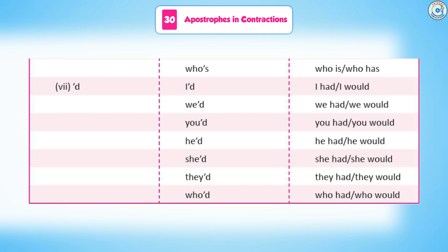Apostrophe + 'd' contractions: I'd (I had or I would), we'd (we had or we would), you'd (you had or you would), he'd (he had or he would), she'd (she had or she would), they'd (they had or they would), who'd (who had or who would).